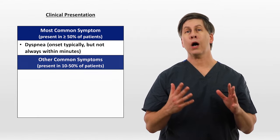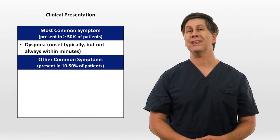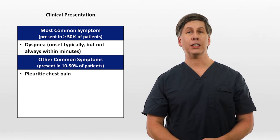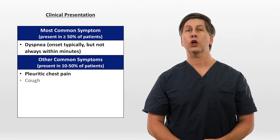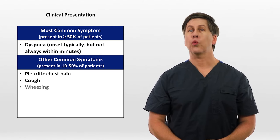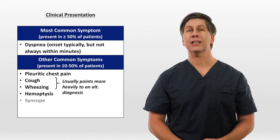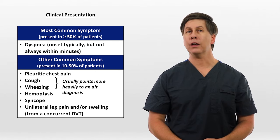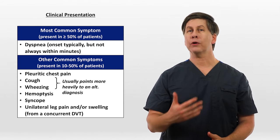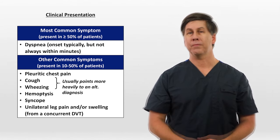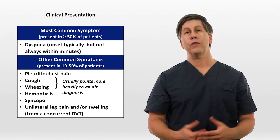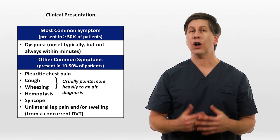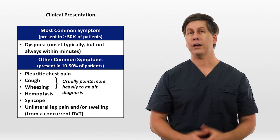Other common symptoms, occurring in between 10 and 50 percent of patients, include pleuritic chest pain, cough, wheezing, hemoptysis, syncope, and unilateral leg pain and/or swelling from a concurrent DVT. Anecdotally, the association between PE and syncope is underappreciated.